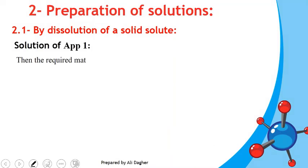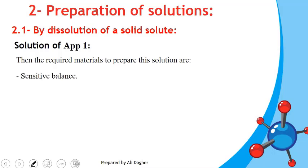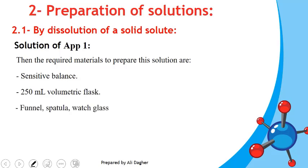The required materials to prepare the solution are: a precision (sensitive) balance, a 250 mL volumetric flask, a funnel, a spatula, and a watch glass. This is the end of part 2.